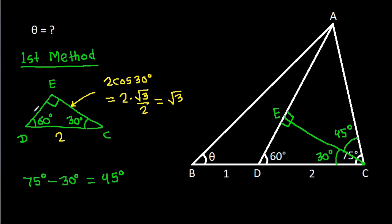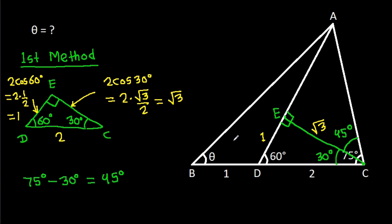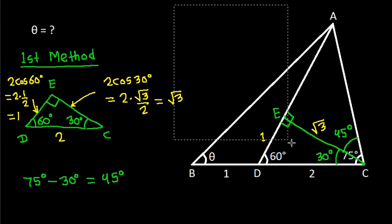And ED will be 2 cos 60 degrees, that will be 2 times 1 over 2, and it will be 1. So ED is 1, and EC is root 3.